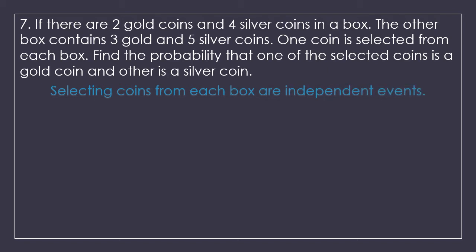If I denote the first box as the first event and the second box as the second event, both events are independent. Whenever events are independent, conditional probability does not apply. This is what I explained in a previous tutorial on the law of multiplication of probability. Because these are independent events, we just need to multiply the probabilities to find the intersection.